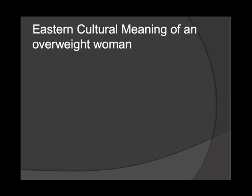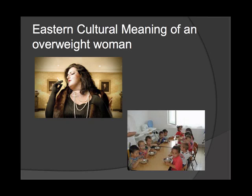A good example is the eastern cultural meaning of an overweight woman. In some eastern cultures, an overweight woman has the connotation of being rich and wealthy, and on a symbolic level, she will be seen as able to provide enough food for any future children.